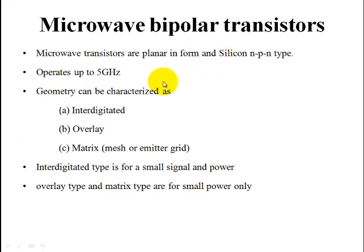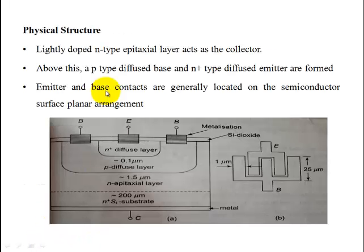The matrix can also be called mesh or emitter grid. The interdigitated type is mainly used for small signal and power applications, whereas overlay and matrix are used for small power applications.